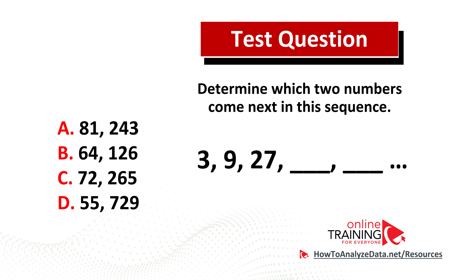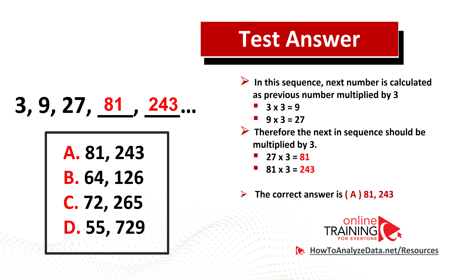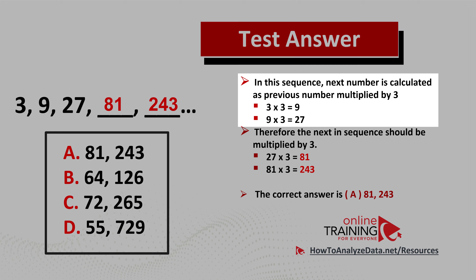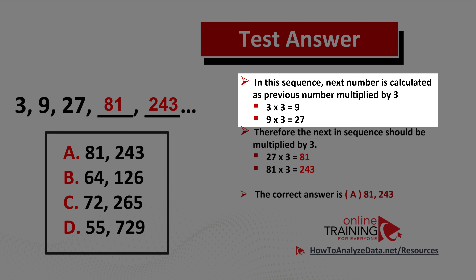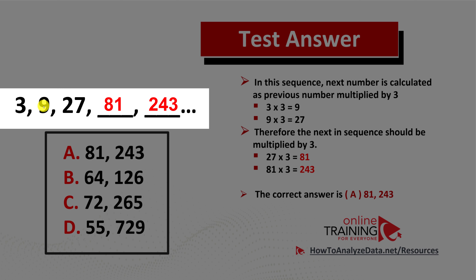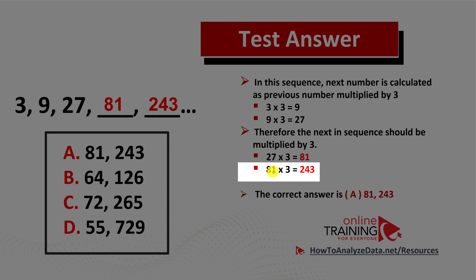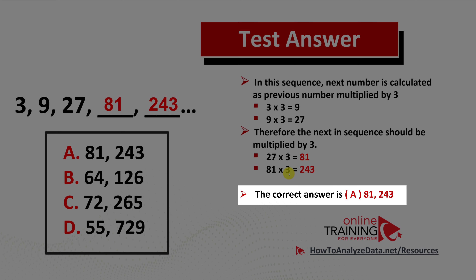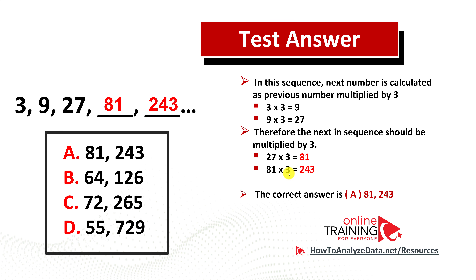Did you figure out the solution? To solve any sequence-type question, you need to determine the pattern. In this particular sequence, the next number is calculated as the previous number multiplied by 3. You have 9 calculated as 3 times 3. 9 times 3 is 27. The next number after 27 is 27 multiplied by 3 = 81. And 81 multiplied by 3 = 243. So the correct answer is choice A, 81 and 243.